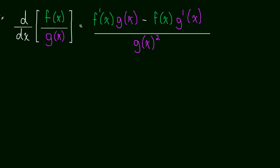So that's what it looks like. This is something called the quotient rule. This is how we take the derivative of quotients. Now, how does that apply? Let's take a look — or, I should say, how does it apply to a real example?